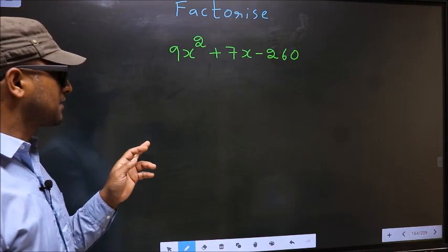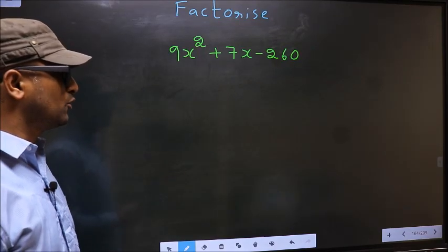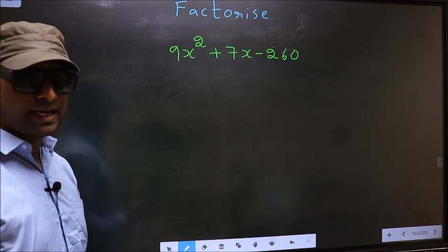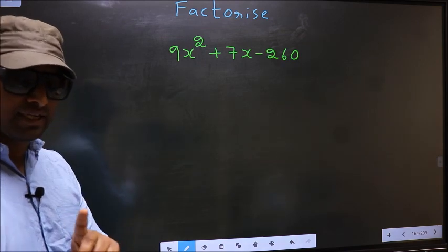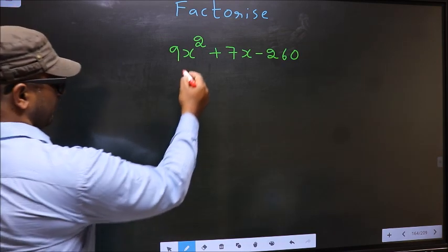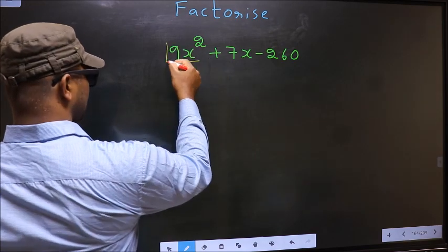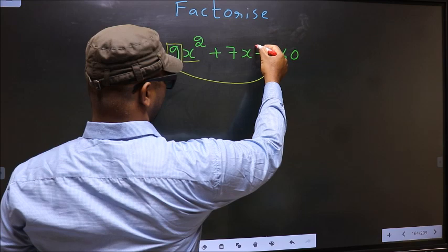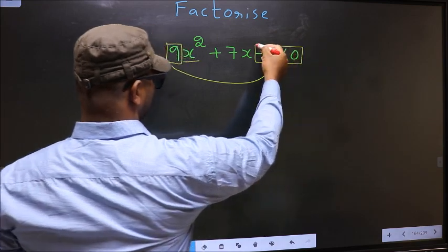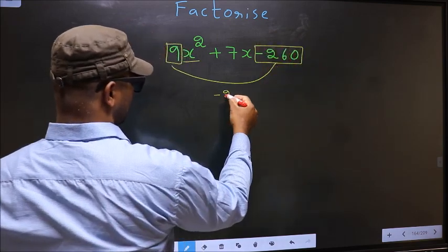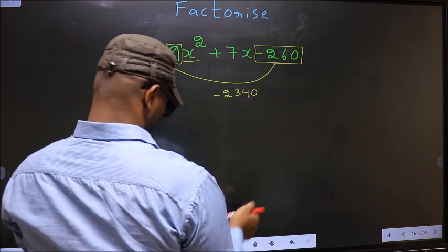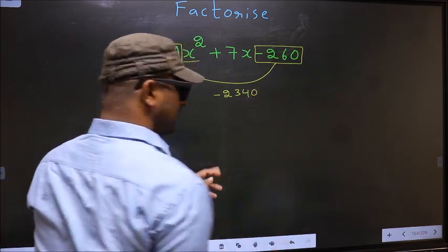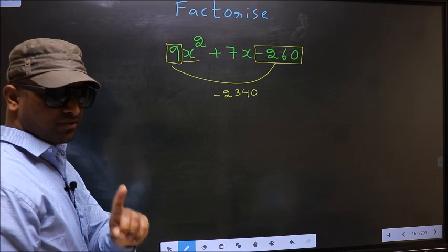Factorize 9x square plus 7x minus 260. To factorize, step 1: coefficient of x square, that is 9 here, should be multiplied to the constant minus 260. We get minus 2340. This is your step 1.